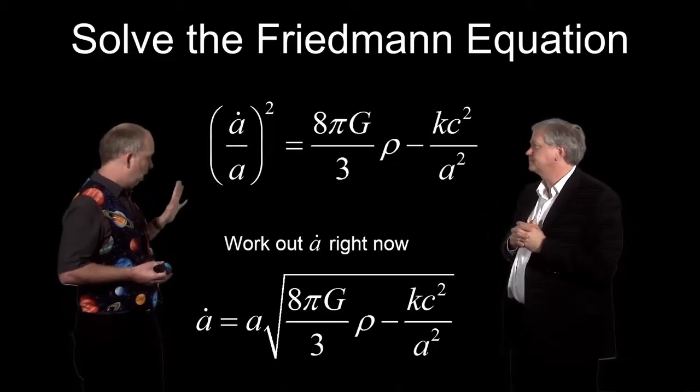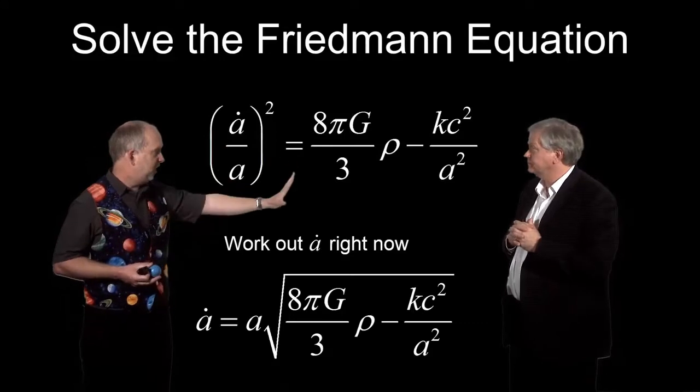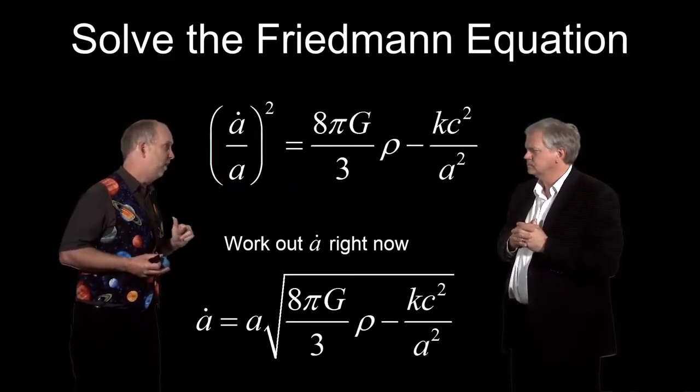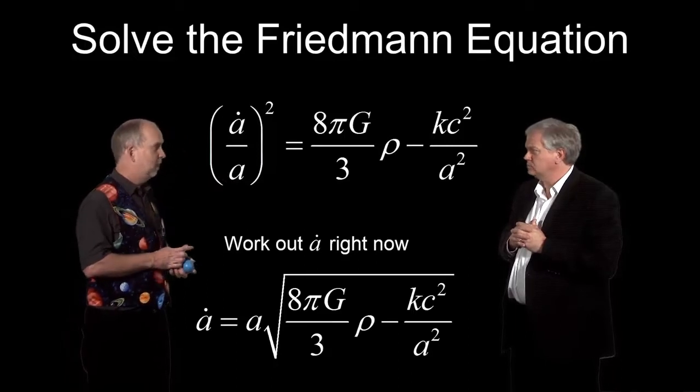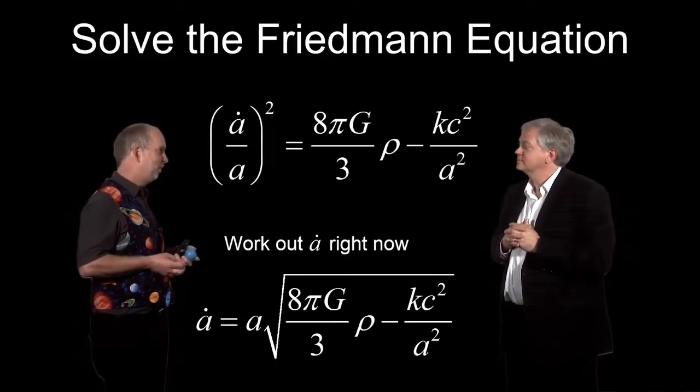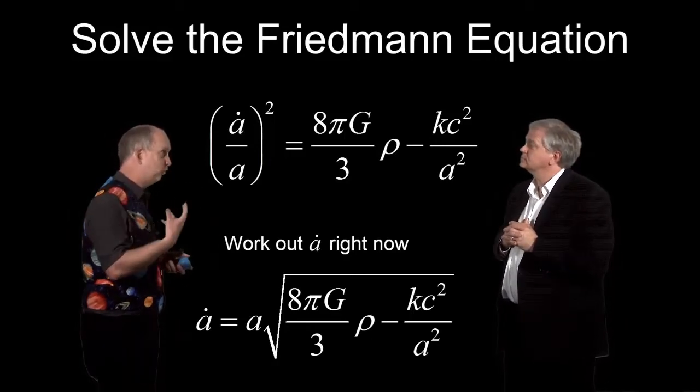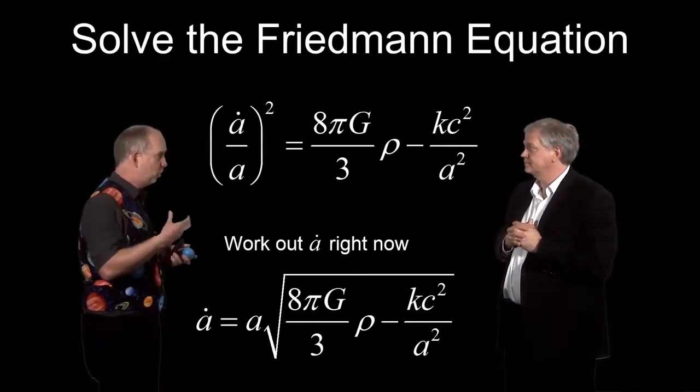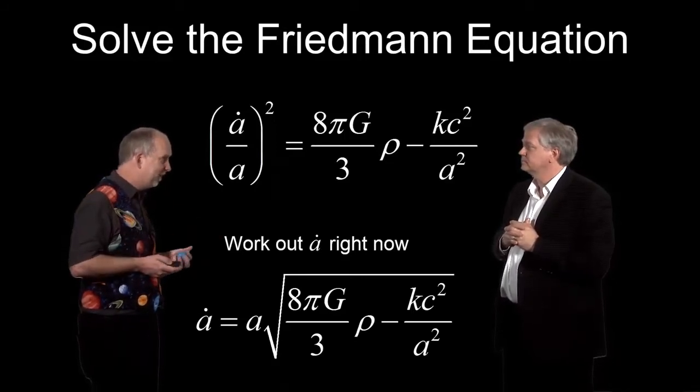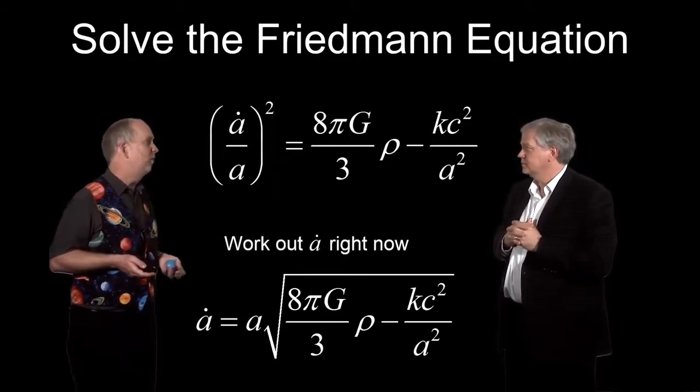So the basic idea is we know everything here right now. We're going to define a of t as 1 right now. Why are we going to do that? Well, we can define it as anything we like. We can call it 47 or 2 or anything you like. This just defines the coordinates we use. This is telling us the ratio of x to r. And we can measure the coordinates as anything we like. So let's just define the scale factor as 1 right now.